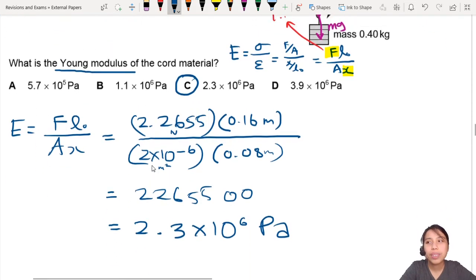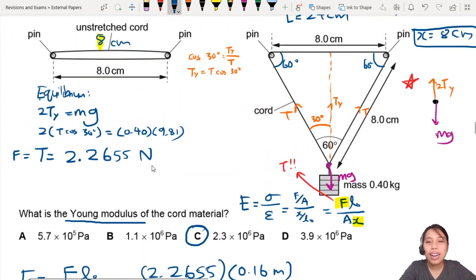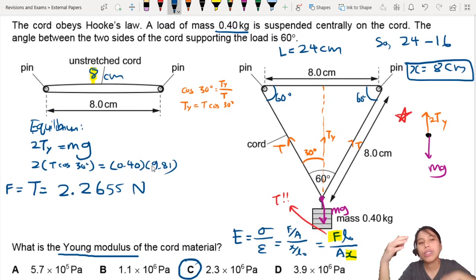That was a bit tricky, right? One of the main challenges is we don't know what force to use when calculating. Yes, we know the equation for Young's modulus, but what do you plug in? You need to remember that this mass will have some weight pulling down, and that weight is balanced by the tension forces' vertical component—two of those.